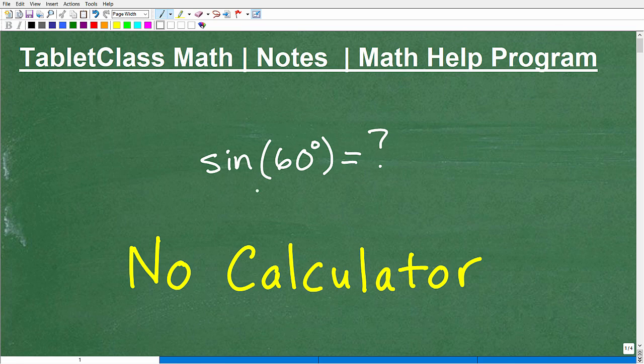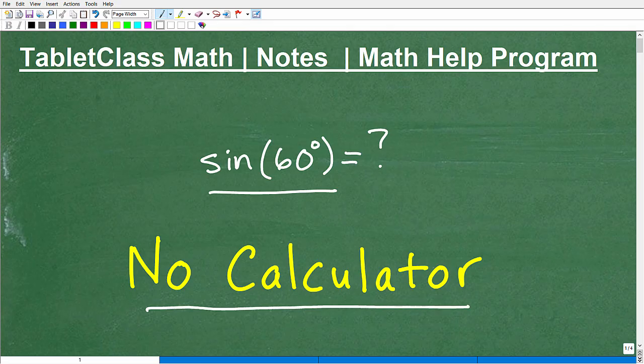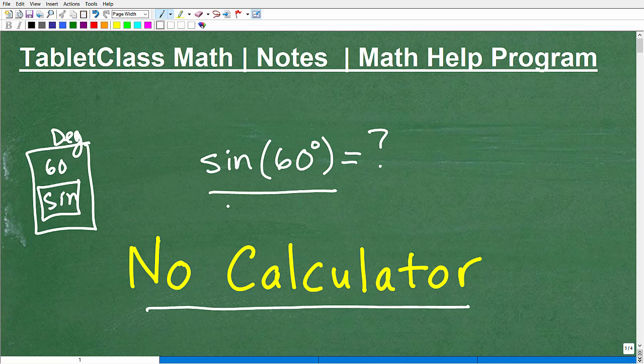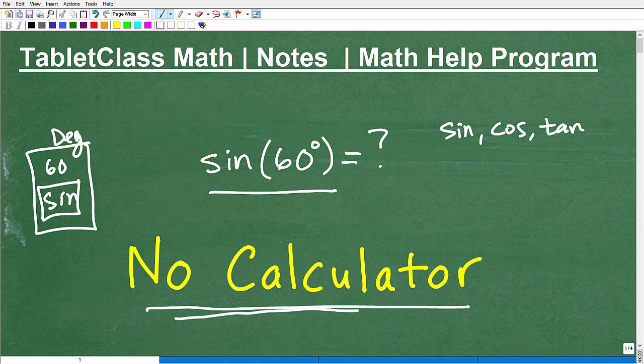Okay, let's find the sine of 60 degrees without a calculator. Now, of course, you can get your calculator out and put in 60. Make sure your calculator is in degree mode and hit that sine button and you would get the answer. But there's a lot of angles when you're studying trigonometry that you're going to have to be able to evaluate for sine, cosine, and tangent without the aid of a calculator.